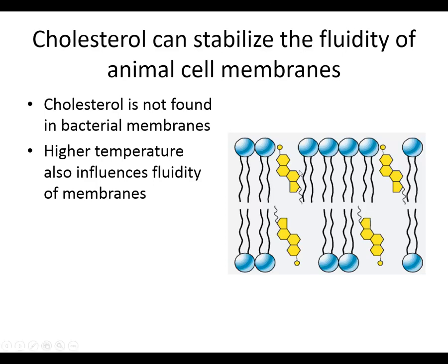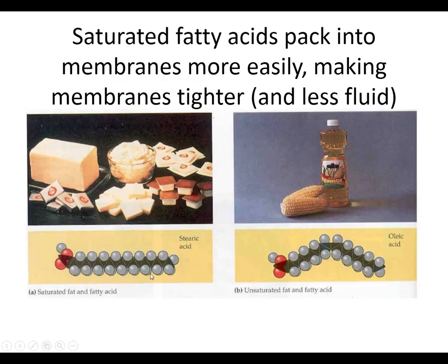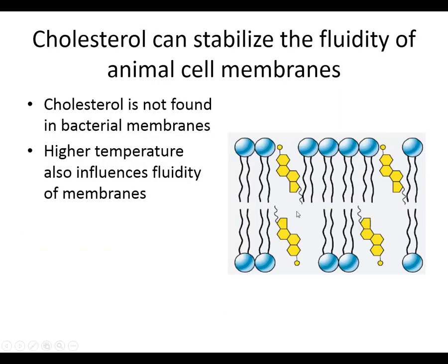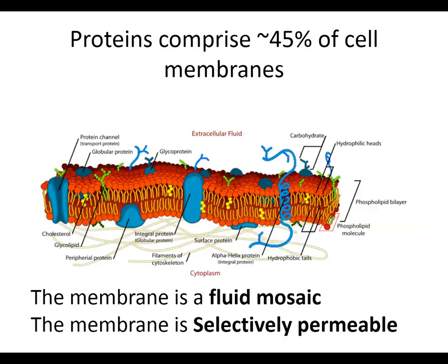Cholesterol in animal membranes can stabilize fluidity. Along with chemical composition — whether you've got saturated or unsaturated fats in your membranes — that's one factor that determines fluidity. Another thing that determines fluidity is temperature. Another is whether you have cholesterol molecules in the membrane; if you do, fluidity becomes more stable across temperature.